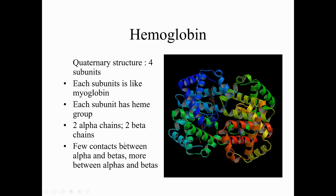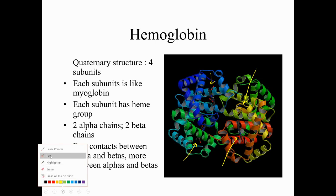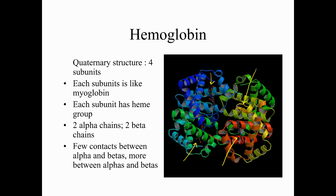Hemoglobin has similarities to myoglobin but has four subunits, each one similar to myoglobin and each containing a heme group. There are four heme groups total, one per subunit. This structure gives hemoglobin four binding sites for oxygen.